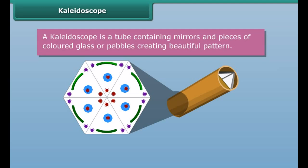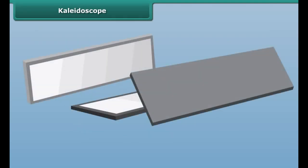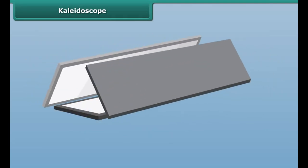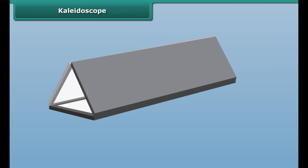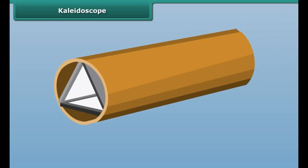What is a Kaleidoscope? It is a tube containing mirrors and pieces of colored glass and pebbles. As the viewer looks into one end, light entering the other end creates a colorful pattern due to the reflection of the mirrors when rotated. Let us perform an activity to make a Kaleidoscope.